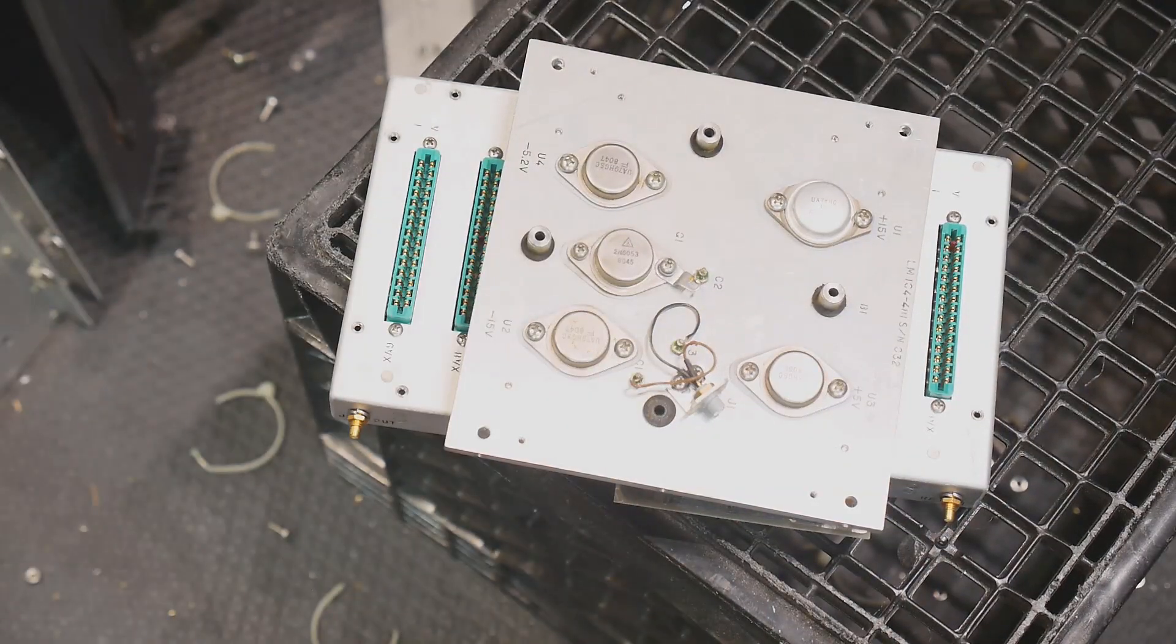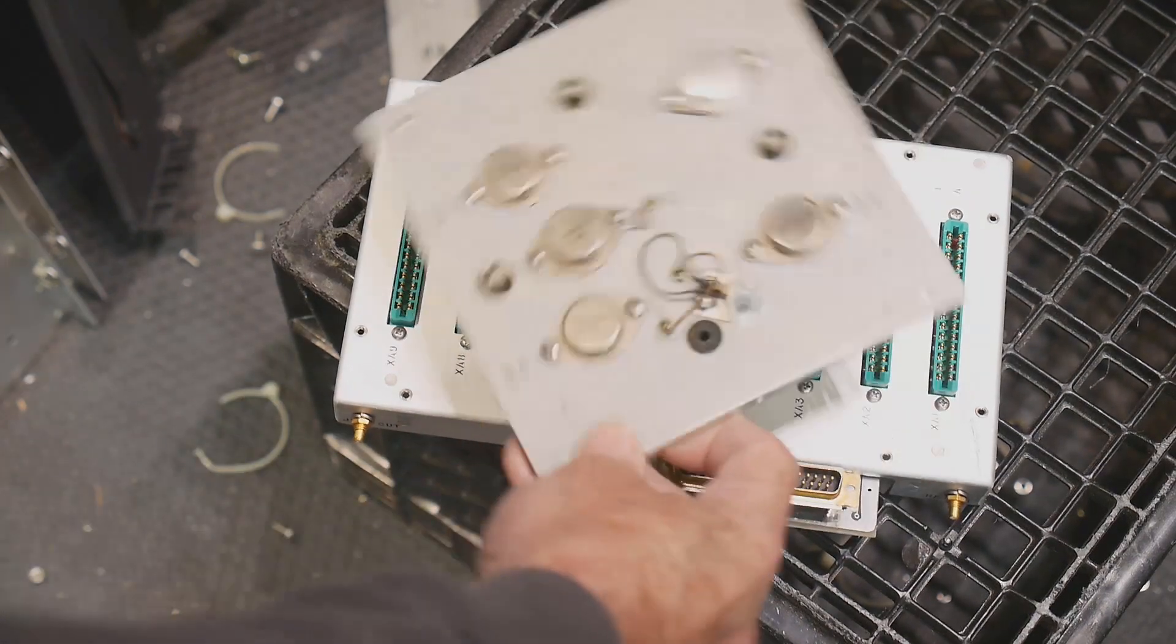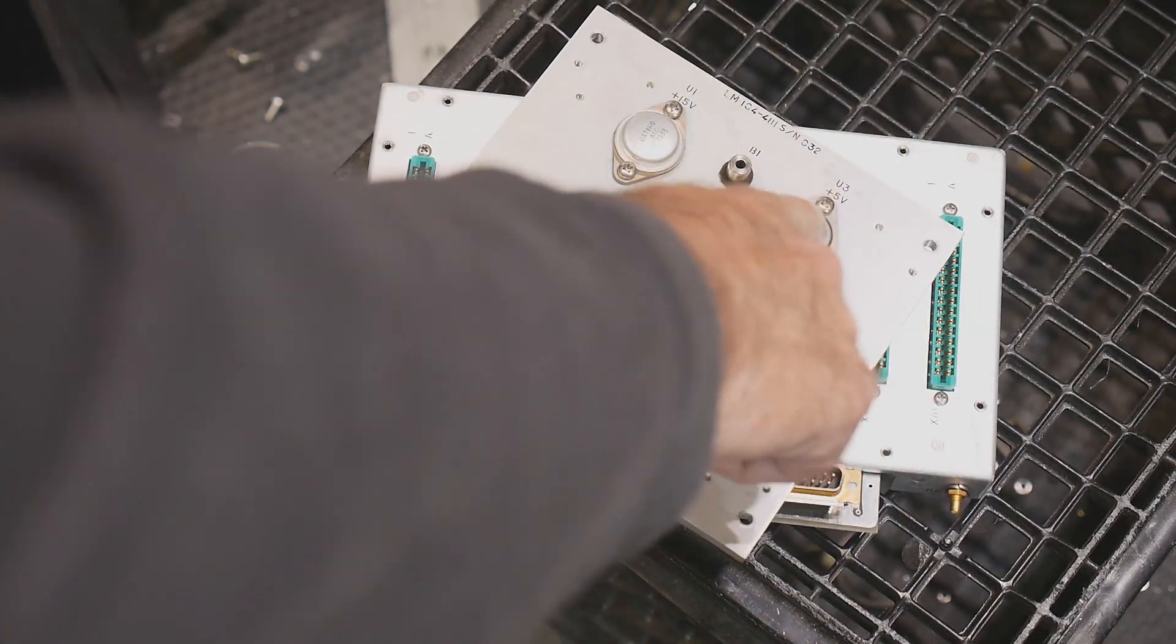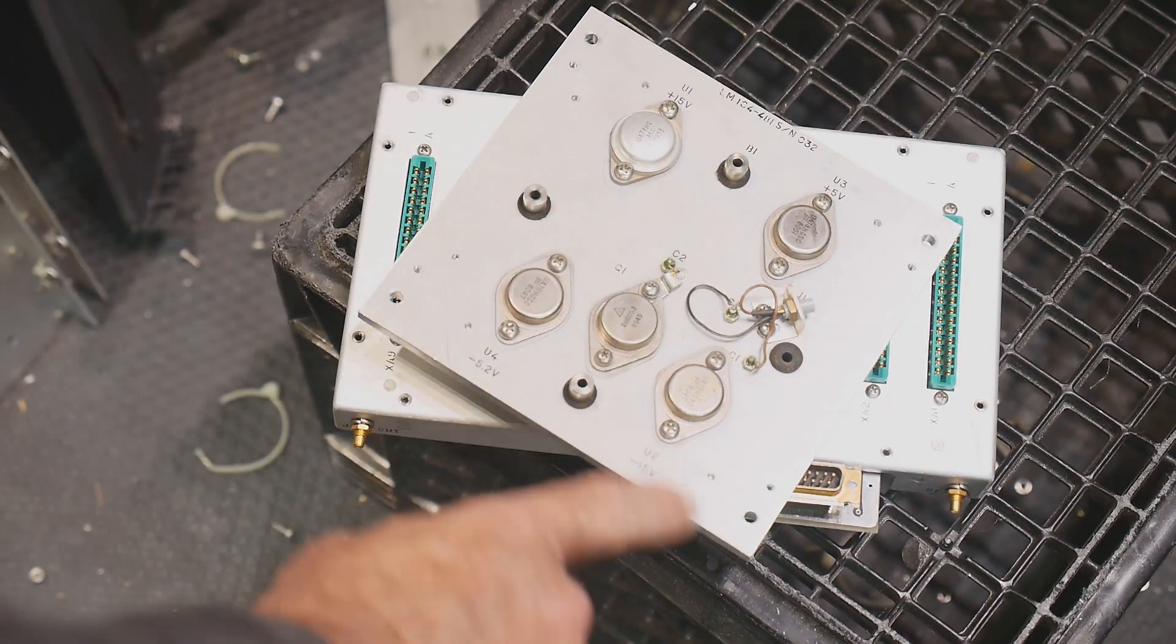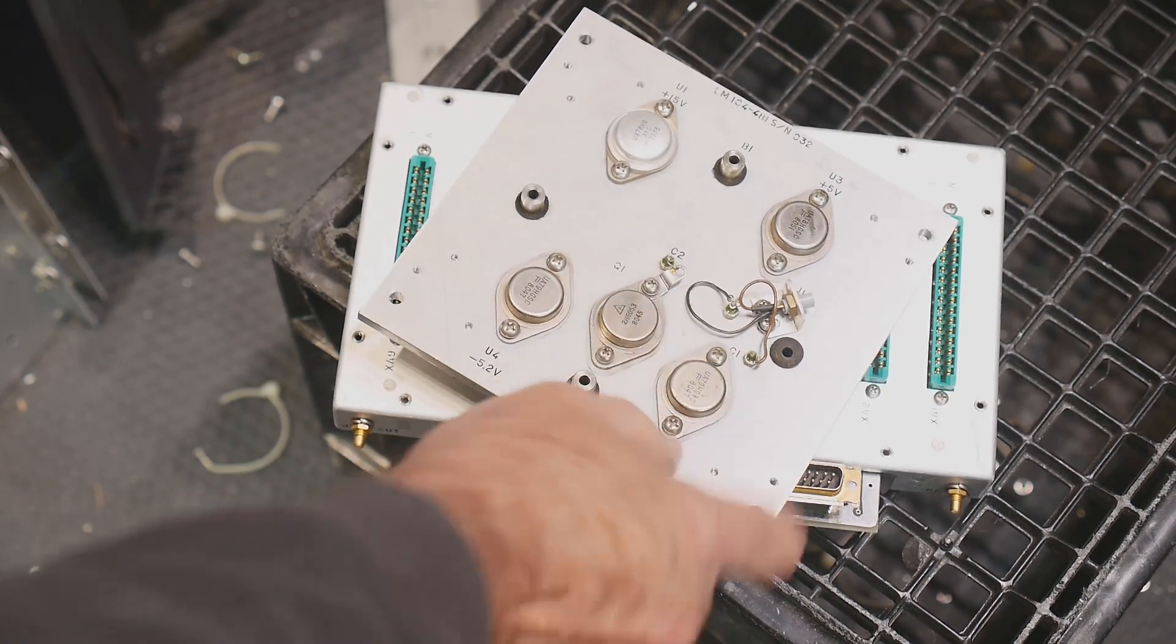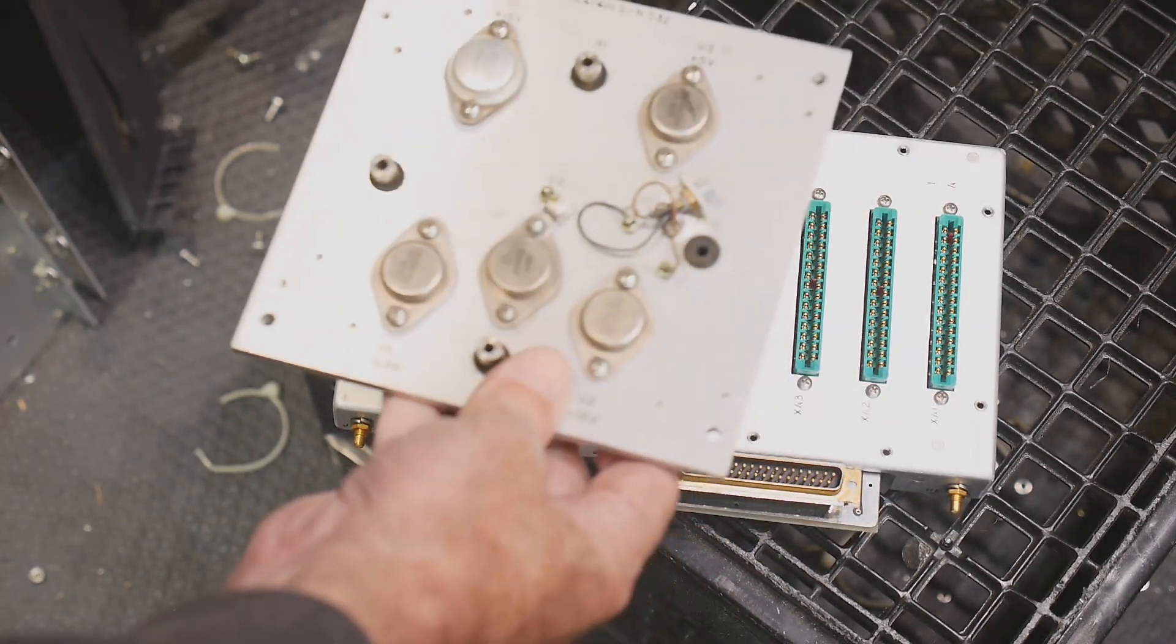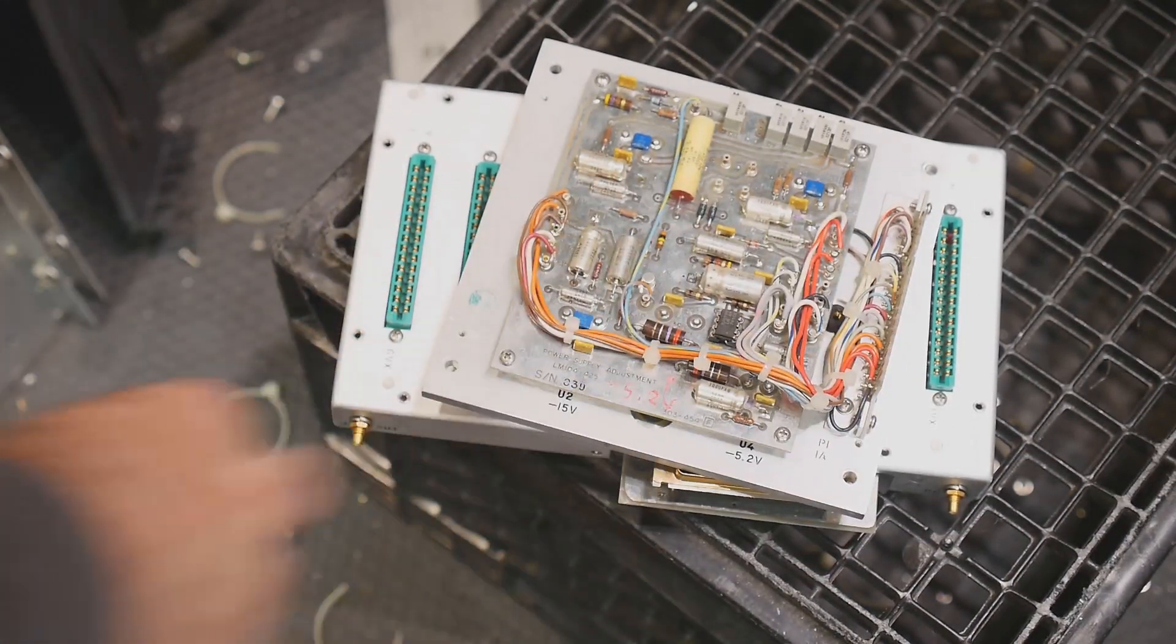And I still have the power supply board. I haven't looked at yet. It's got a bunch of, I don't know if those are pass transistors or big three-terminal regulators. They're even marked. So these are probably three-terminal regulators: plus 5, plus 15, minus 15, minus 5.2, and that one is probably minus 2.5 if I have to guess. Not much else on this side.